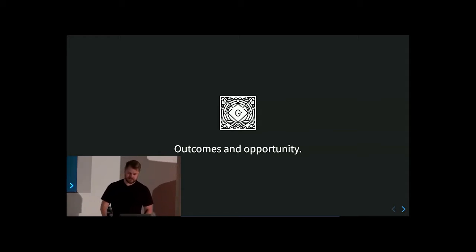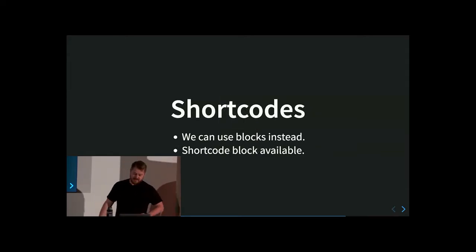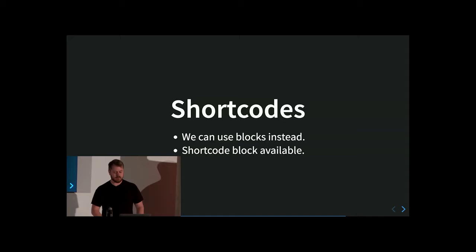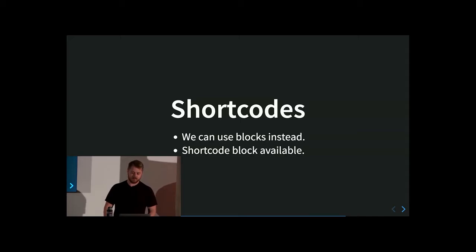Let's talk about outcomes — a before and after imagining of how WordPress will work after Gutenberg is merged. For shortcodes: I would argue it's a better user experience if we can replace those shortcodes with blocks, and that's the ideal option. But there is a shortcode block available, and we'd still like to provide backward compatibility for those who rely on shortcodes — which in my experience is many, many people. It would be better to replace them with blocks for a more resilient user experience, but you can still use shortcodes if that's what you need.